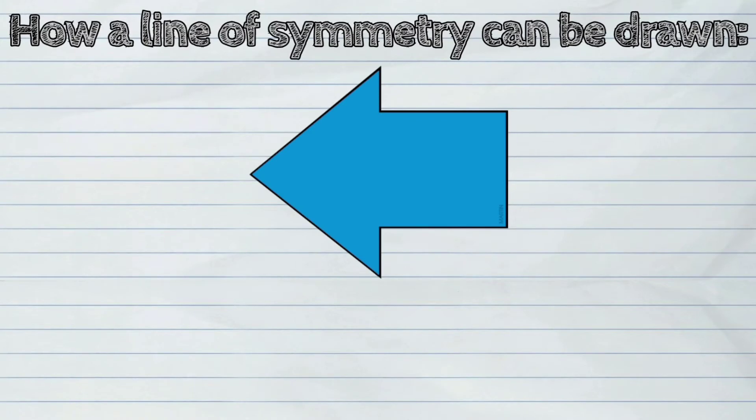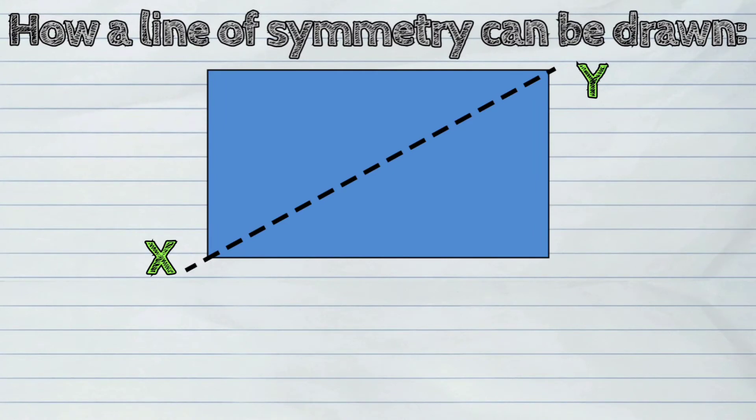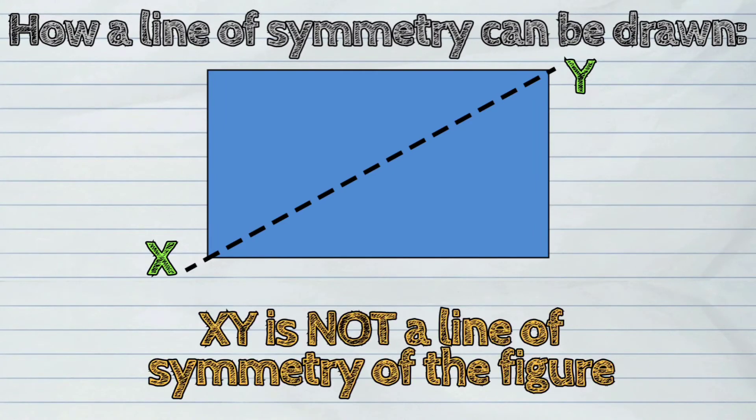Third example. In this case, CD is not a line of symmetry of the figure. And fourth example, XY is also not a line of symmetry of the figure.